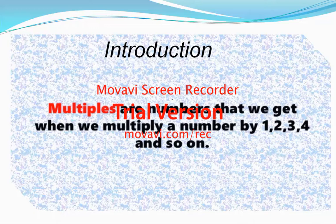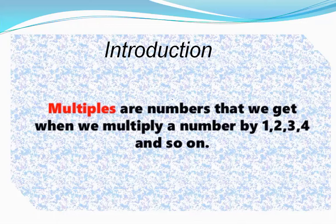For example, if one is multiplied by two, one two is two. One is multiplied by three, one three is three, and these two and three numbers are multiples.